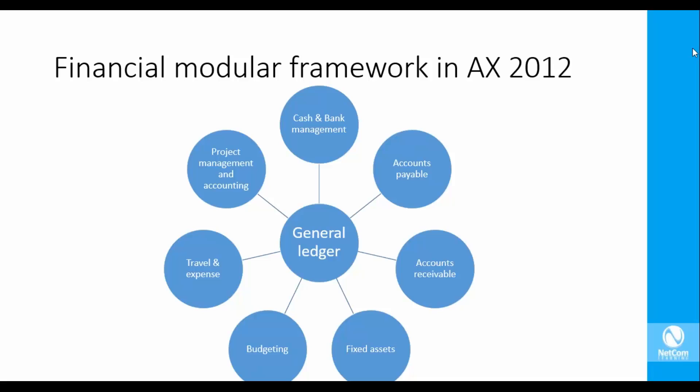Broadly, these are the seven financial modules that feed into the general ledger module of AX. We'll start with the general ledger module because it is the ultimate final resting point of all data — everything that happens in the enterprise. Anything with a financial implication has to ultimately come and rest in the general ledger.